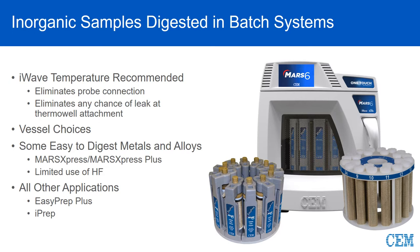Some easier-to-digest metals and alloys will work fine in a MARS Express or MARS Express Plus at 180°C. The only concern is you don't want to use too much HF, as the bent-and-reseal vessel design of the Express will allow some HF fumes to escape. While 99% will be pulled out by the exhaust system, be careful when grabbing vessels afterwards and wipe down the cavity thoroughly at the end of the run.